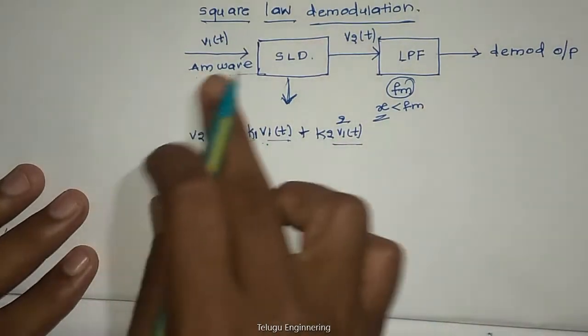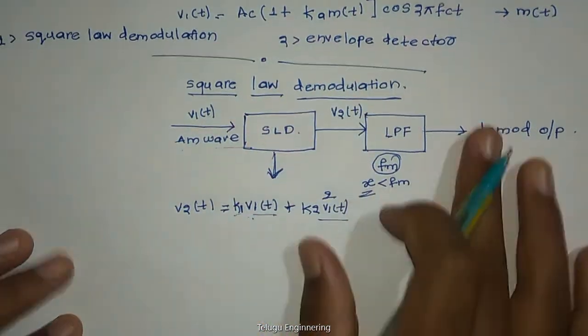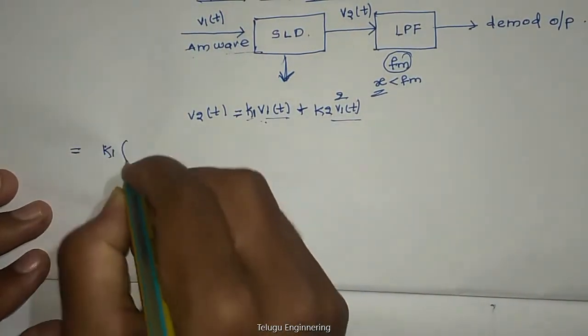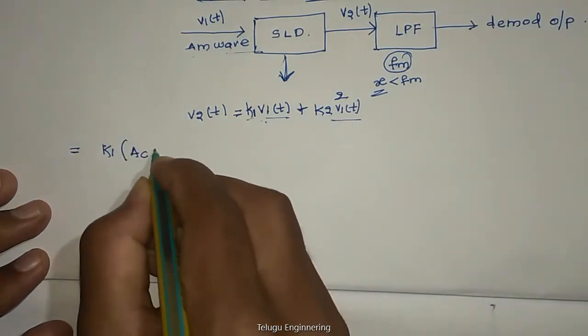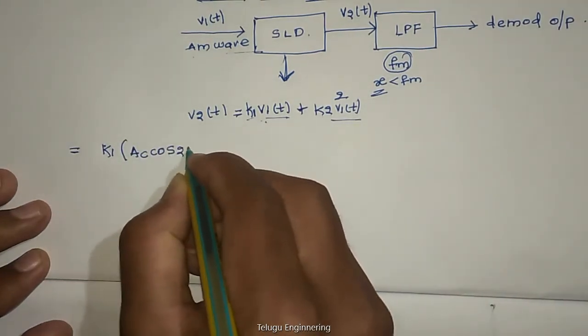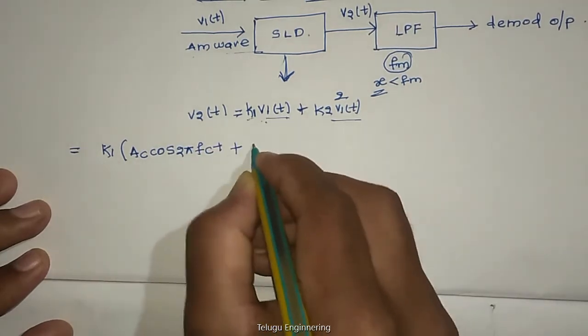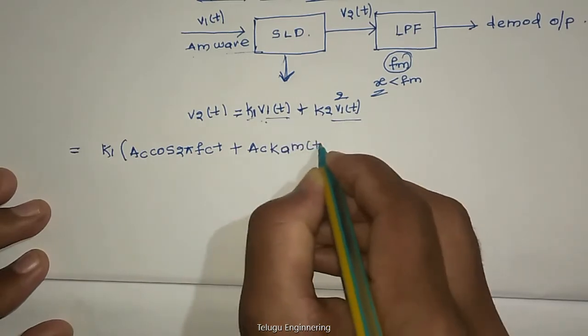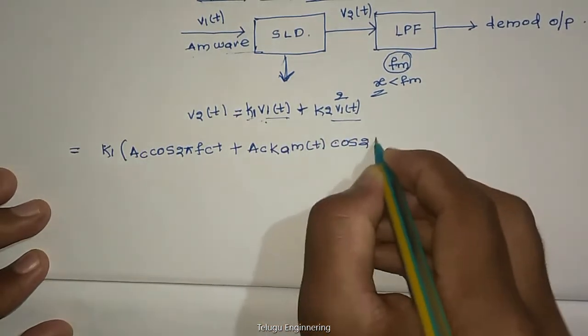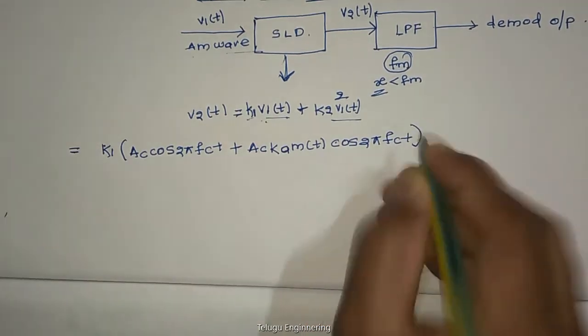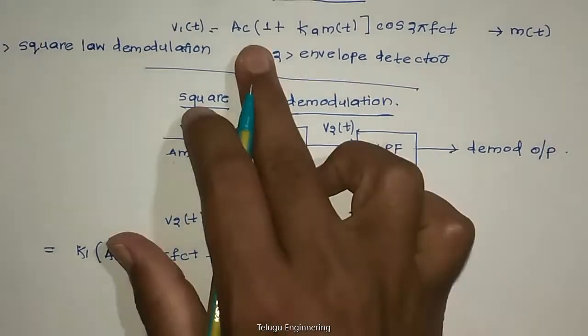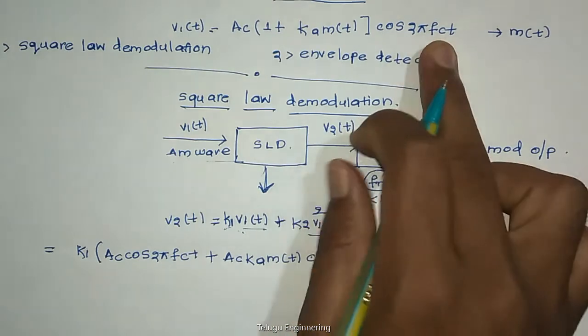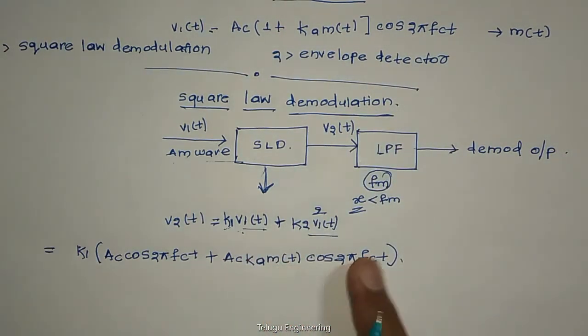When input is V1 of T, we will get output V2 of T in such a functional manner. And V1 of T is AC, the AM wave, the standardized AM wave. So let's see what we will get at the output. So K1 into AC cosine 2 pi FCT plus AC KA M of T cosine 2 pi FCT. Just extend AC cosine 2 pi FCT plus AC into KA M of T cosine 2 pi FCT.